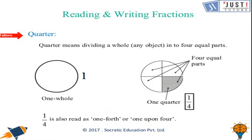A quarter is when a whole is divided into four equal parts. If one part is used and the whole is divided into four parts, we say it as one quarter. One quarter is also read as one fourth or one upon four — they are basically the same thing, just different terms.